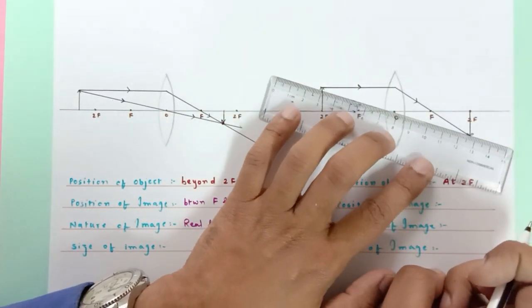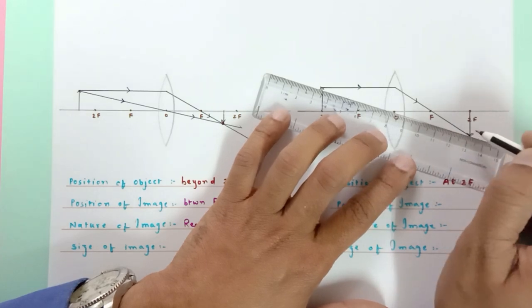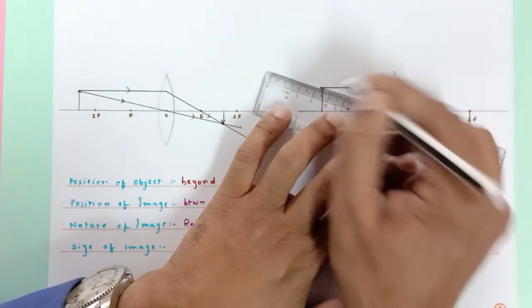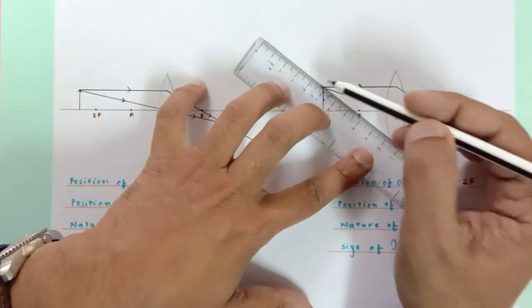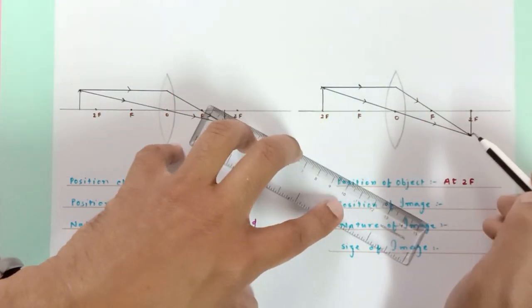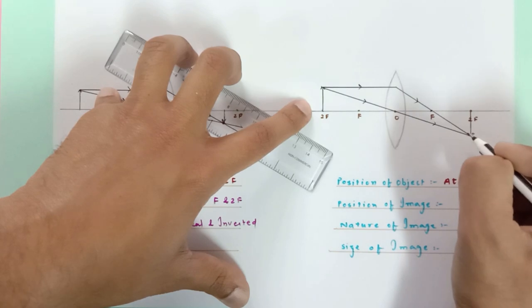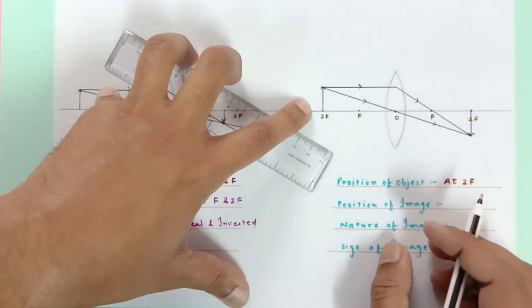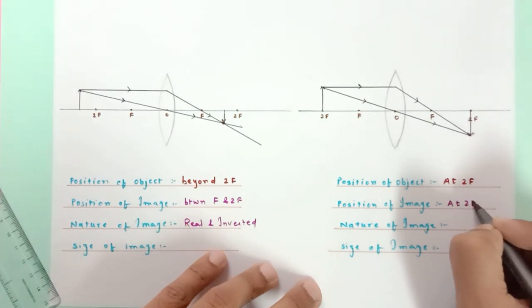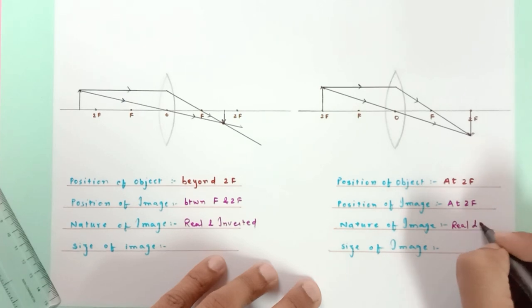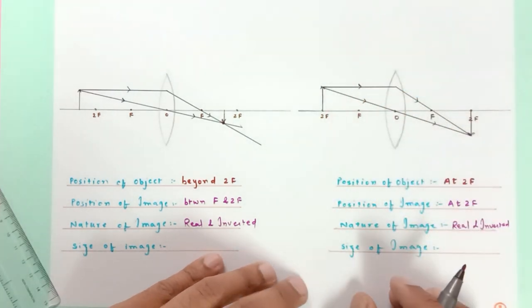Second ray: you can take it from f so that afterwards it becomes parallel, but I mostly prefer passing directly through O and joining the head of the image. You can also select a third ray — any ray passing from f after refraction becomes parallel. We see that the object and image are at the same point but on the other side of the lens. Since the refracted rays are meeting: real and inverted. Size is same as that of the object. Position: at 2f. Nature: real and inverted. Size: same as the object.